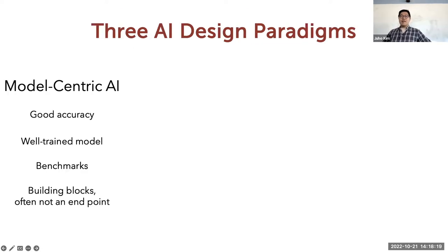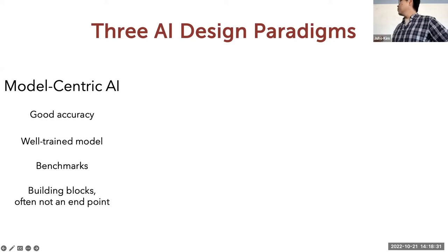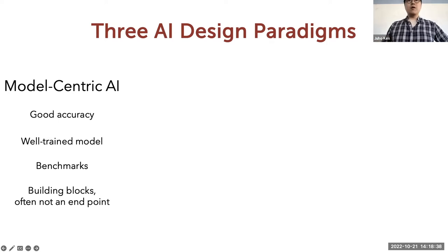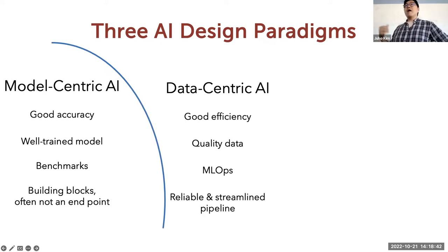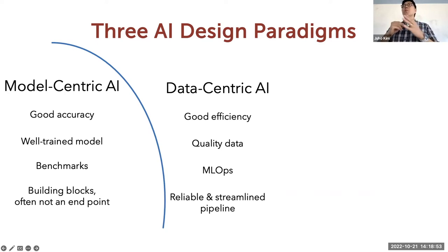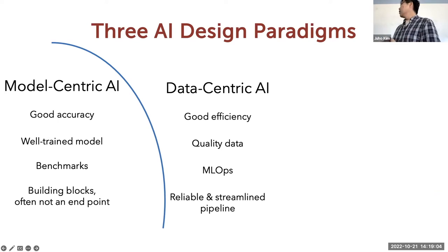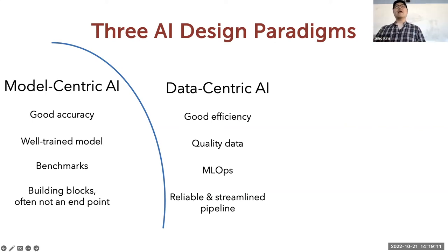We need to think about the design paradigm of how we build AI applications. Model-centric AI — focusing on accuracy, training well, and beating benchmark numbers — has been the driving force for most AI development. More recently, data-centric AI, advocated by Andrew Ng, says that just focusing on the model is not enough: the data going into the model must be carefully planned, collected, and processed, and the entire operational pipeline must be carefully designed.